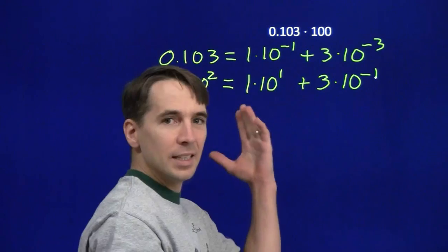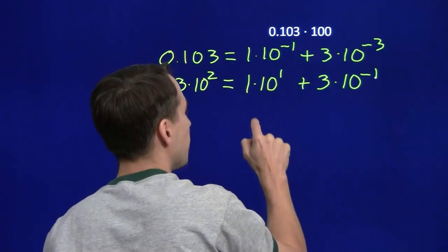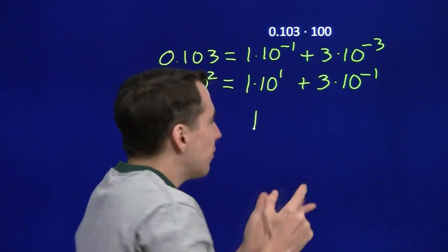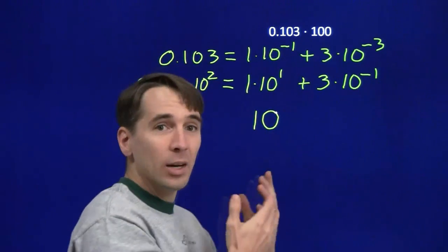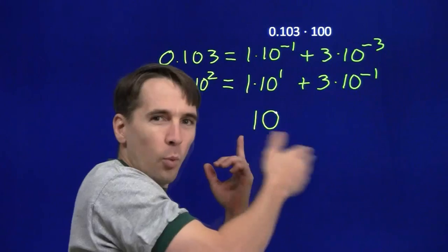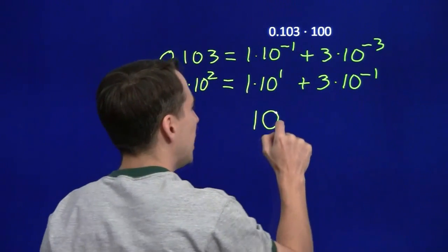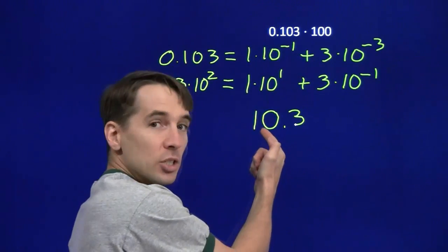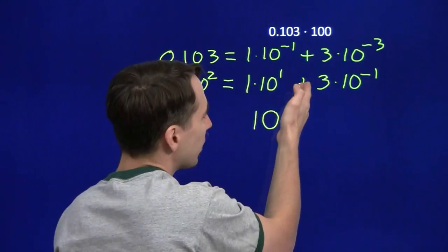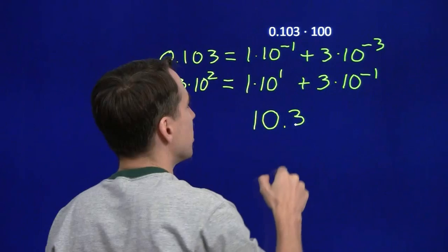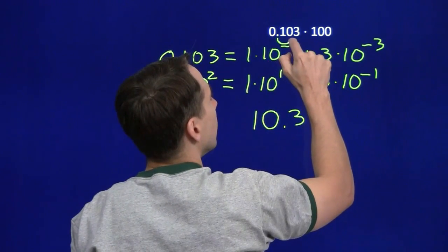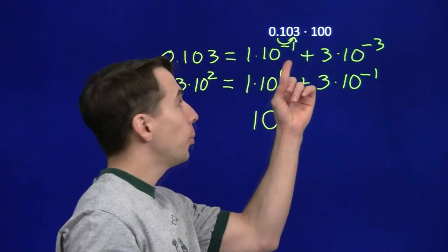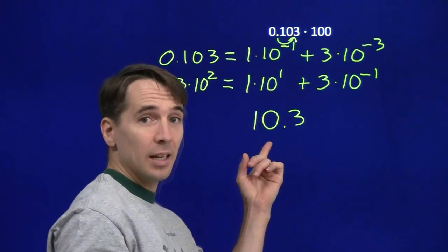Again, we can just read the digits off our answer. We've got a 1 in the tens place and the 3 is in the tenths place. We have nothing in the ones, but we need to include the 0. We can't write 1.3 because that would move the 1 into the ones place, not the tens place. And we can't just write 1, 3 — that would be 13, but the 3 is out in the tenths place. The 0 is extremely important; you can't forget the zeros for missing digits. Multiplying by 100 moves the decimal point two places to the right, and we get 10.3.